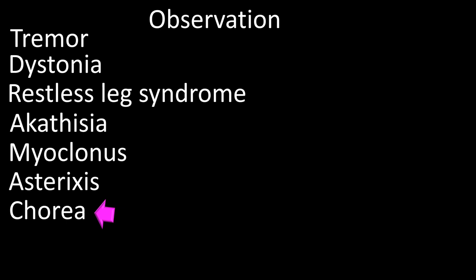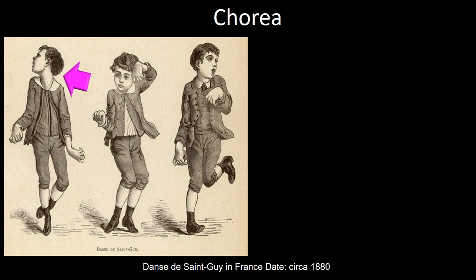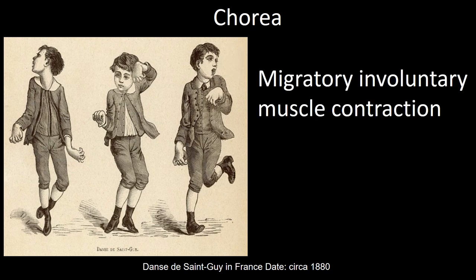Next, we will talk about chorea. Chorea is defined as an involuntary spasmodic movement, especially of the limbs and facial musculature. An engraving from 1880 depicts these movements involving the left hand, right hand, neck, wrist, leg, foot, and face. This activity tends to migrate from one area of the body to another in quick succession.